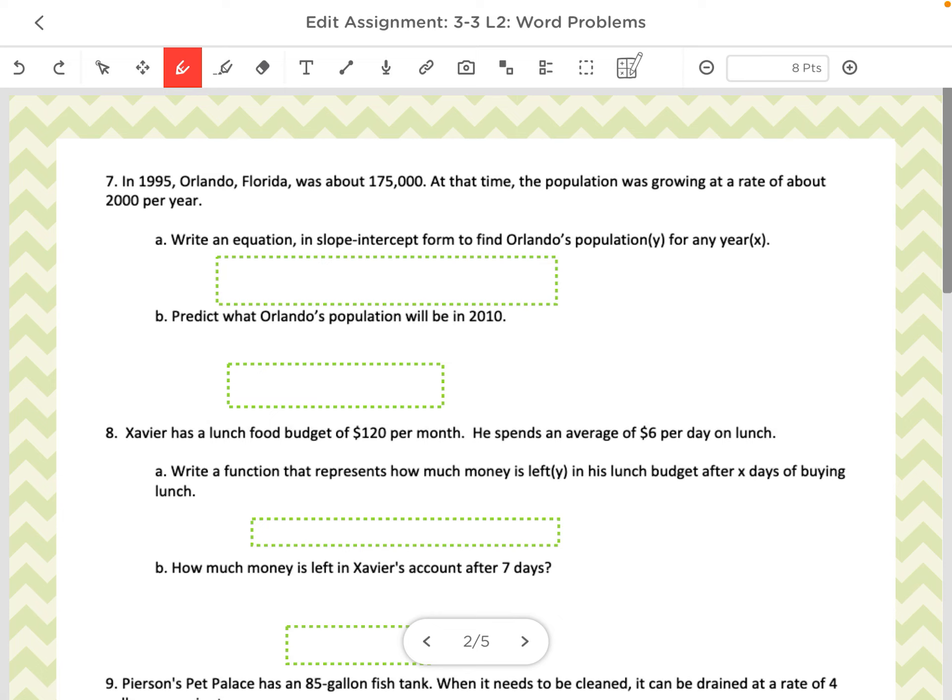Okay, we want to write these equations in slope-intercept form. So let's see what numbers that we have. It says in 1995, the population was 175,000, so there's one number. And the population was growing at a rate, so remember that word rate is my slope. So this number 2,000 per year is my slope. So there's my slope, and this is my y-intercept because that's what it started with. So my equation is y equals 2,000x, and it's going up, so we're going to make it positive, plus 175,000.